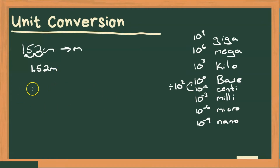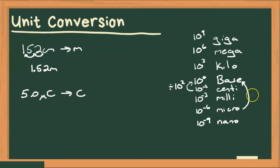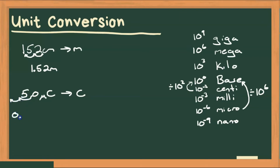Let's try a couple others. What about if we had five microcoulombs? How can I change that to just coulombs, which is the base unit? So I'm going from micro up to the base, going up this table. So I'm going to divide by that order of magnitude, which is a difference of 10 to the six — equivalent to moving our decimal place over to the left six times. So we're going to end up with 0.0000005 coulombs. The decimal was moved over one, two, three, four, five, six spaces.